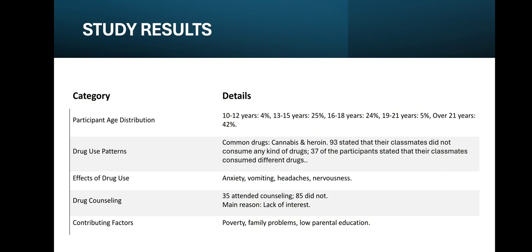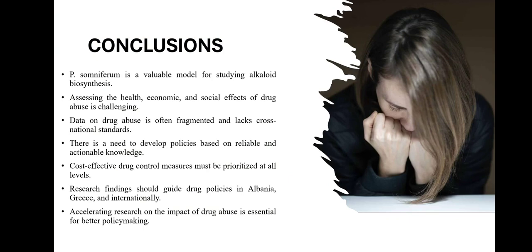Drug use patterns show the most common drugs are cannabis and heroin. Effects of drug use include anxiety, vomiting, headaches, nervousness, and drug concealing. Contributing factors include poverty, family problems and low parental education.